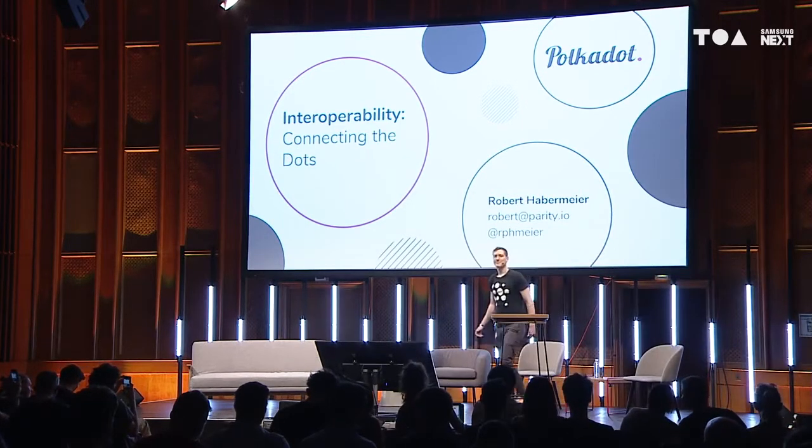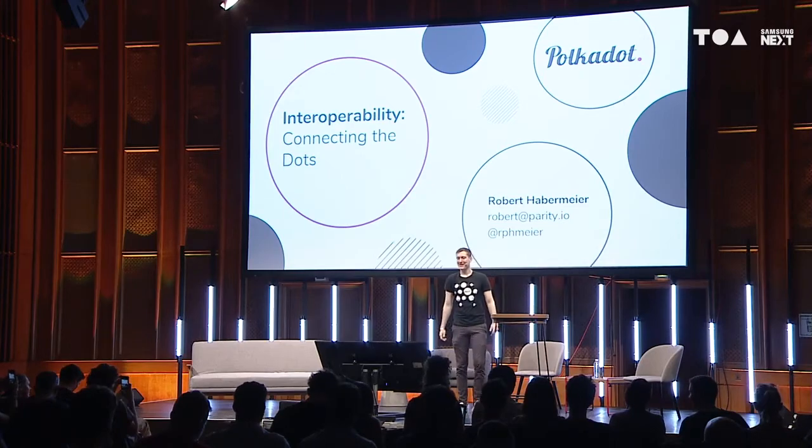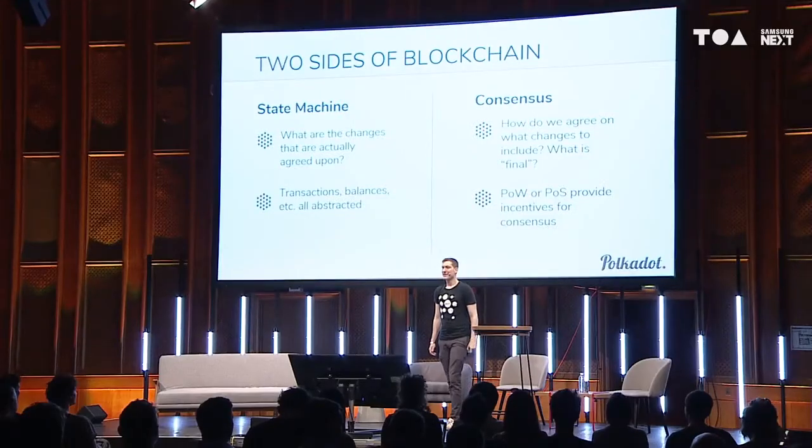Hi. My name is Rob. I work on a project called Polkadot, which is a blockchain for interoperability and scalability — just meant to be sort of the next generation blockchain. But in this talk, I'm going to be focusing just on that interoperability aspect, talking a bit about what interoperability is, why we want it, and how we can achieve it.